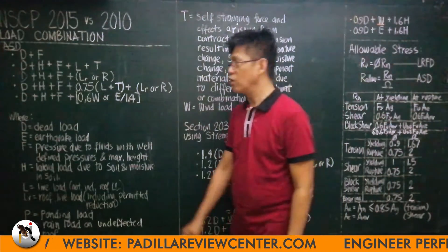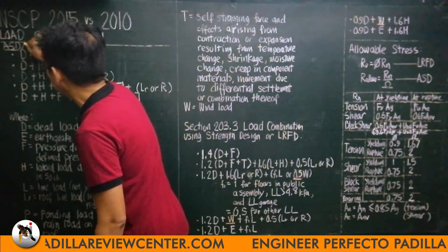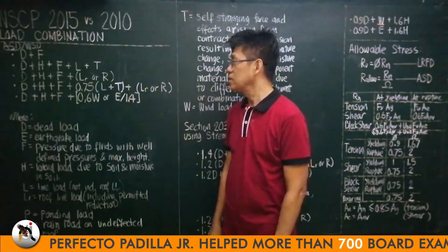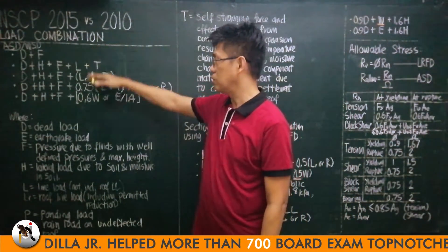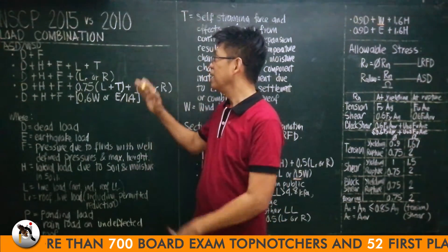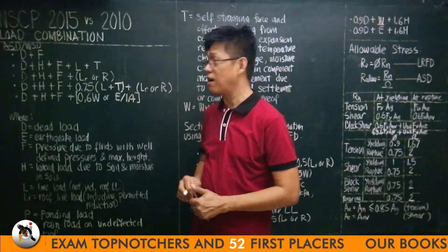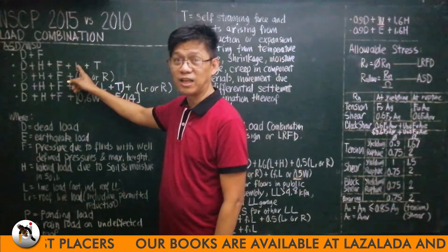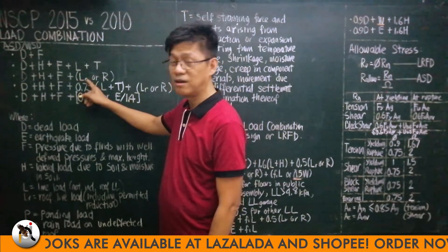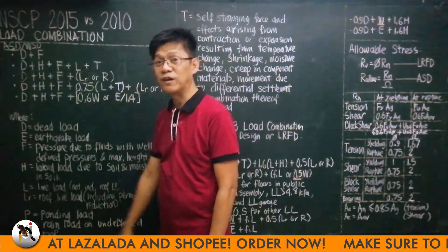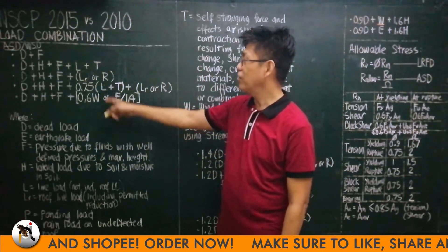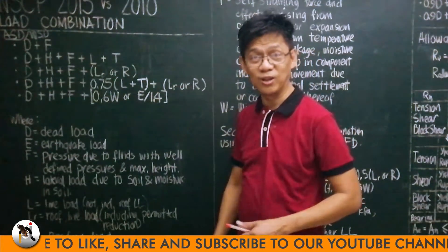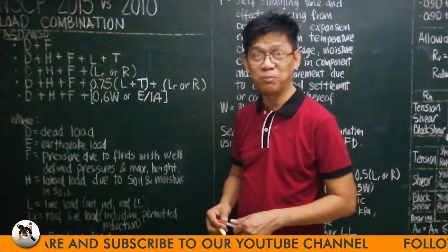As far as ASD or Working Strength Design is concerned, these are the load combinations. Basically, the 2010 and the 2015 are the same. D is the dead load, L is the live load. Take note of L-sub-R — that is the roof live load — or R, which is the rain load. Only one will be used, whichever is more critical. When you use the roof live load, you must include the permitted reduction in that live load. Of all live loads, only the roof live load is permitted to be reduced.